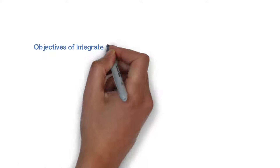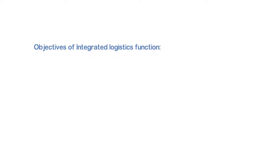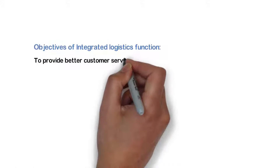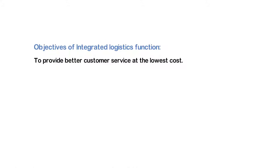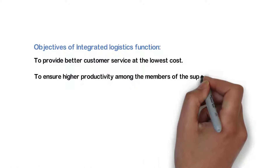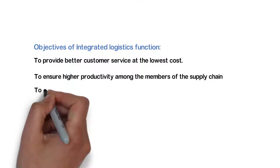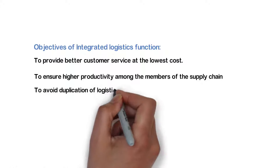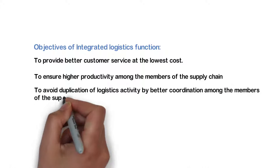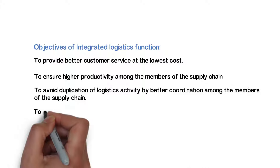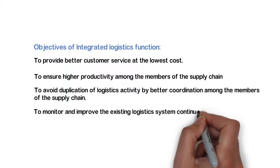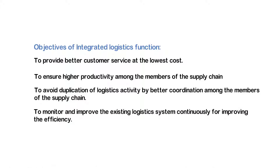The objectives of the Integrated Logistics Function are to provide better customer service at the lowest cost, to ensure higher productivity among the members of the supply chain, to avoid duplication of logistics activity by better coordination among the members of the supply chain, and to monitor and improve the existing logistics system continuously for improving the efficiency of the logistics system.